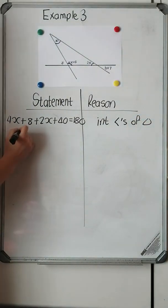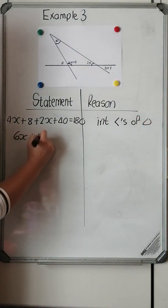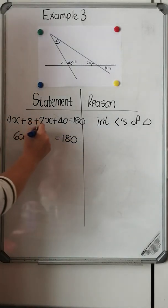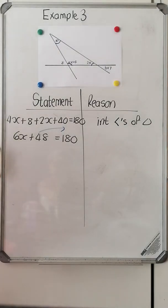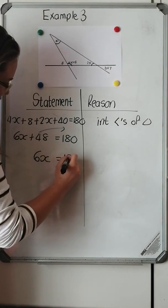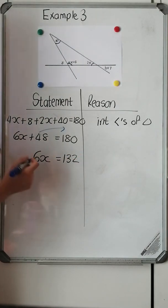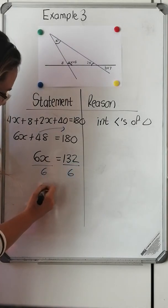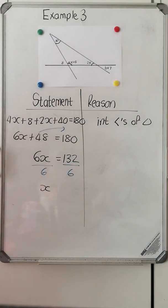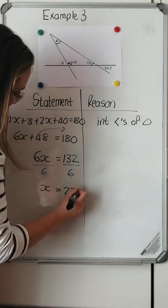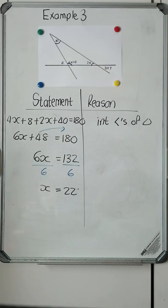My reason is interior angles of a triangle. Solving for x: I've got 6x plus 48 equals 180. Taking 48 over and subtracting gives me 132. So 6x equals 132. Dividing both sides by 6, x is equal to 22 degrees.